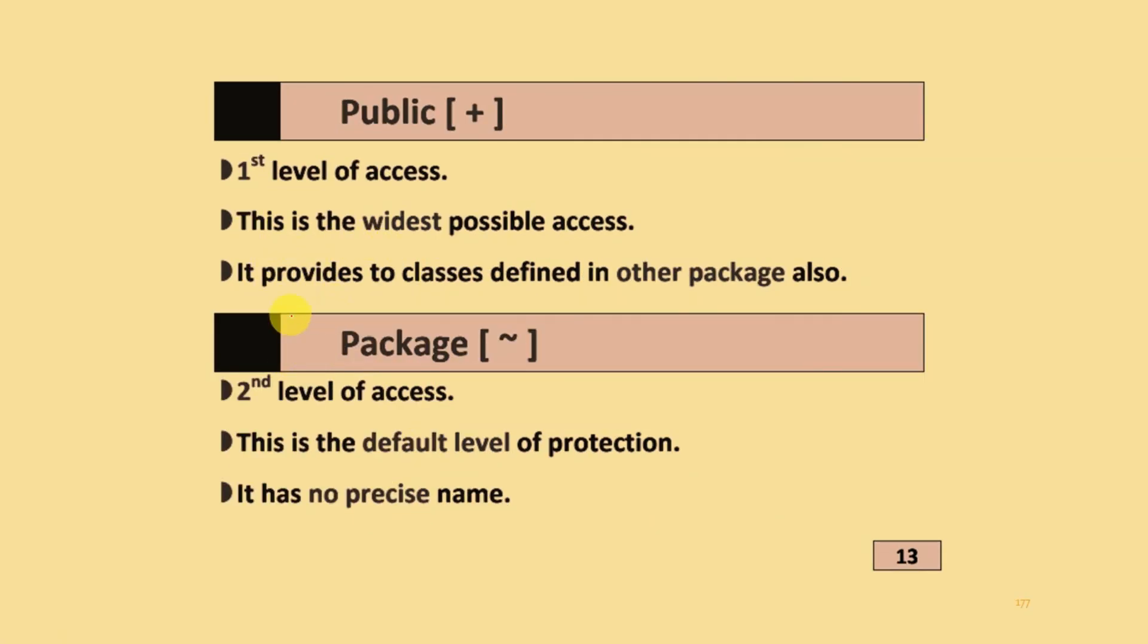Public is the first level of access and this is the widest possible access. It provides the class defined to other packages also. Next is package: the second level of access and this is the default level of protection. It has no precise name.